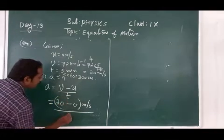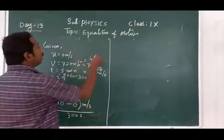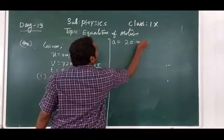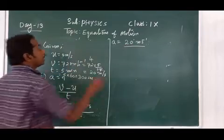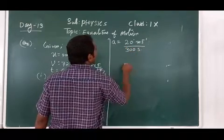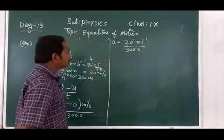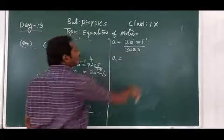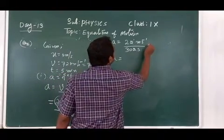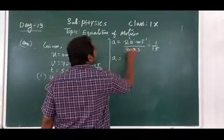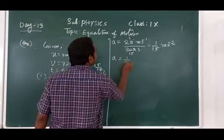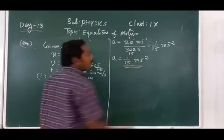A equals 20 minus 0 divided by 300 seconds. The zero is cancelled, and 20 divided by 300 simplifies — when we cancel we get 1 by 15. So acceleration is 1/15 meter second raised to minus 2. This is the acceleration of the train.